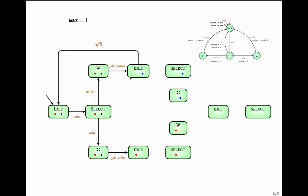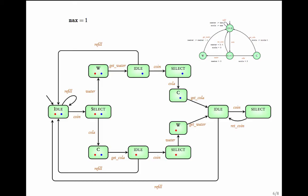In this idle state, if a refill transition is taken, you get back to the idle location with n_water and n_cola set to max. Hence in the transition system, no matter which idle state you are in, if you take the refill transition, you go to the idle state which has n_water and n_cola equal to 1. This represents the transition system corresponding to this program graph with the initial value of max equal to 1.